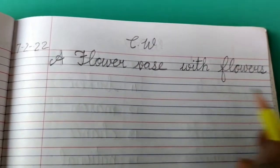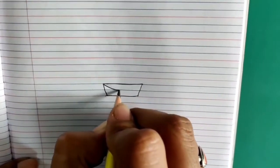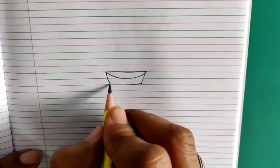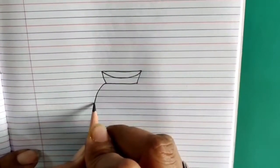First of all we will draw two slipping lines and join these slipping lines with the help of slanting lines. Now inside that draw half circle. From here we will draw an oval shape.